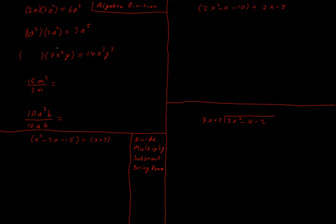Now here we've got two letters, but we're just going to do one after the other — there's nothing really different in this question. We have 7x squared multiplied by y, and we end up with 14x cubed y cubed. Always start with the number: 7 multiplied by what gives me 14? — 7 multiplied by 2. Then x squared multiplied by what gives me x cubed? I have 2 x's and end up with 3, so I need x to the power of 1, just x. And I start with 1y and end up with y cubed, so I must multiply by y squared — 2 y's multiplied by another y gives me 3 y's.